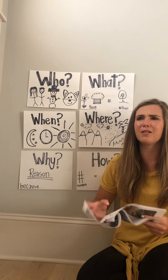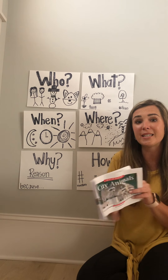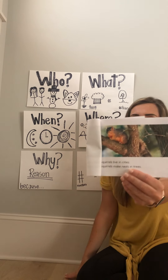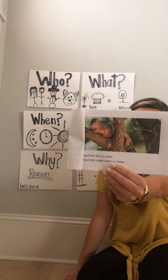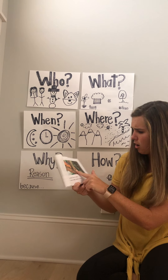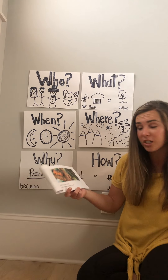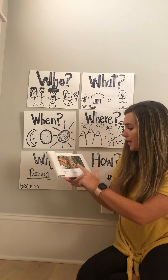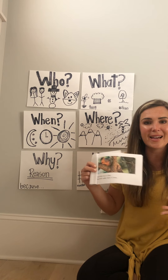My next question is: where do squirrels make their nests? I heard the book mention a couple of different places. Let me go to the squirrel page — use your picture and your words to solve. Looking at the picture, I see the squirrel is sitting on a tree, so maybe in the trees. Let's double-check by looking at the words: squirrels live in cities, squirrels make nests in trees. So my answer is squirrels make nests in trees.